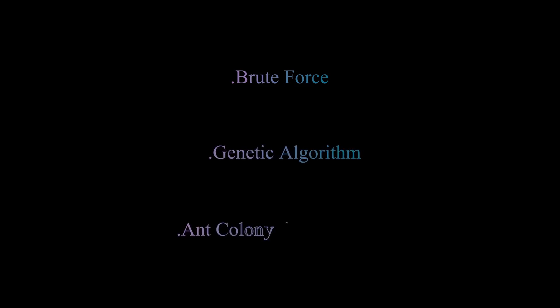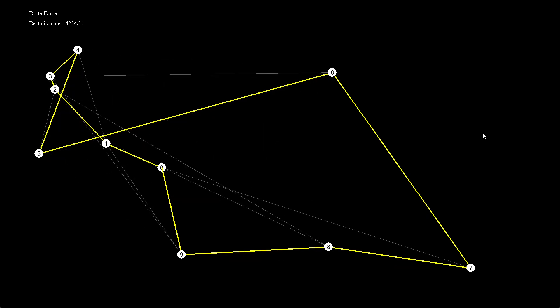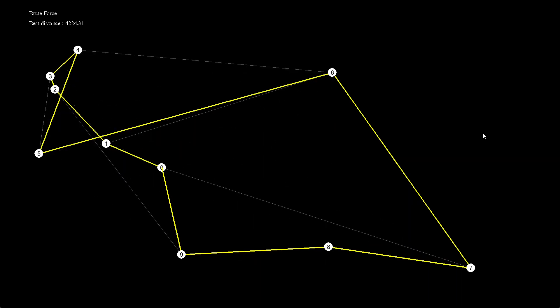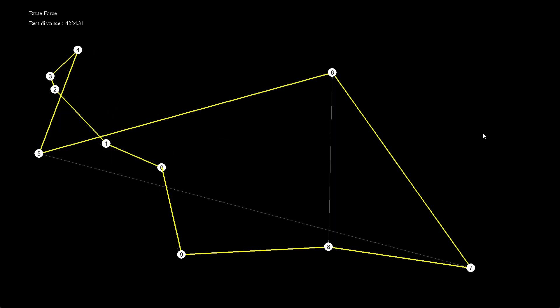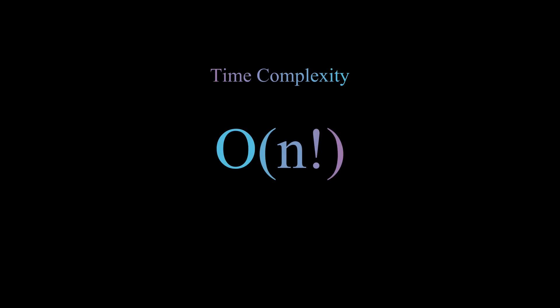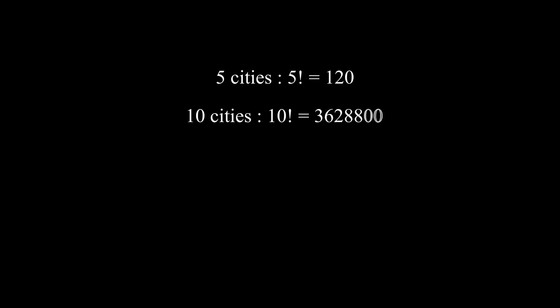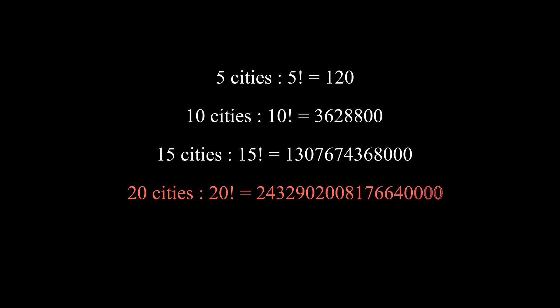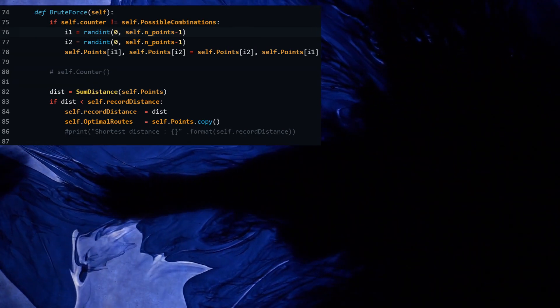The brute force approach, also the simplest and most naive, calculates and compares all the possible permutations of routes to determine the shortest unique solution. To solve TSP using the brute force approach, you must calculate the distance of each permutation of routes and then choose the shortest one — this is the optimal solution. The running time lies within O(n!), the factorial of the number of cities, so this solution becomes impractical even for only 20 cities. To get different permutations of routes, we can use a random function or lexicographic ordering.